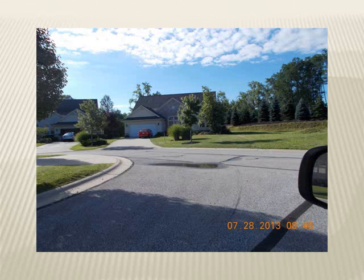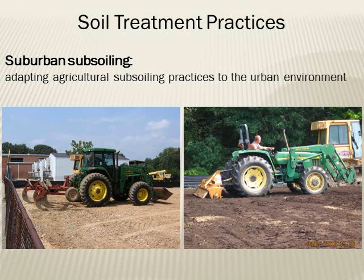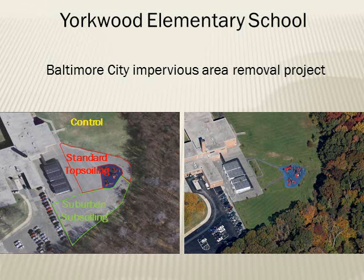The main practice we're looking at is called suburban subsoiling. We've adapted these agricultural techniques of decompaction and amendment to apply them to the urban environment. Decompaction is achieved through deep-bladed ripping and compost amendment through tilling or spading. We were able to implement these techniques on our study site in Baltimore City, Yorkwood Elementary School.